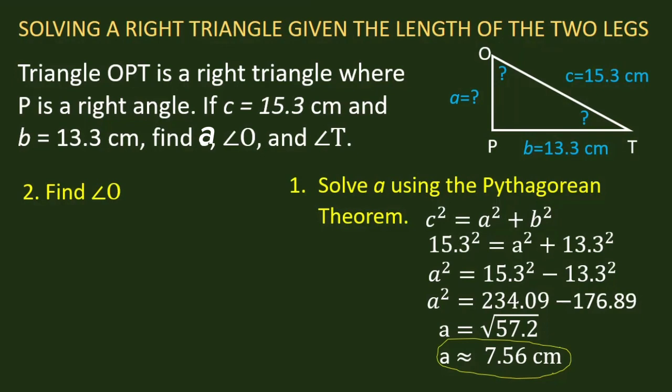Now we solve for angle O. We can use the six trigonometric ratios, or any of those, but for this case we can use cosine. cos O = adjacent/hypotenuse = 7.56/15.3. We can find angle O: that's cos⁻¹(7.56/15.3). Using our calculator, angle O = 60.4 degrees.